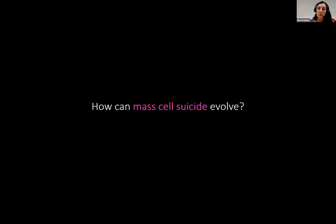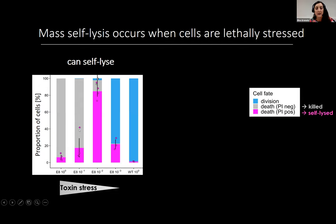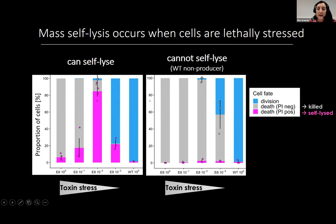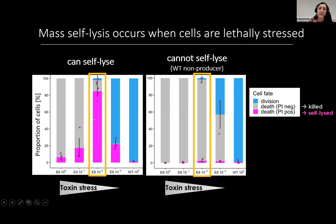To answer that, we went back to the first experiment where we exposed individual cells to sterile competitor supernatant at different concentrations. We wanted to know: these cells that self-lyse en masse at intermediate toxin concentrations — what would have happened to them if they didn't have the ability to kill themselves? So we repeated the experiment with a strain genetically identical except it can't kill itself. Surprisingly, at intermediate toxin concentrations where we see all the self-lysis, this strain that can't kill itself is just straight up dead. So these cells that self-lysed were experiencing a lethal amount of DNA damage from the competitor toxin, meaning they weren't giving up any future reproductive potential by self-lysing — they would have died anyway.